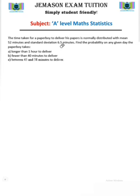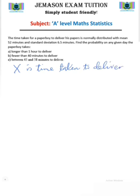To concretize everything learned in this video, we look at this question: the time taken for a paper boy to deliver his papers is normally distributed with mean 52 minutes and standard deviation 6.5 minutes. Find the probability that on a given day the paper boy takes: (a) longer than one hour, (b) fewer than 40 minutes, (c) between 45 and 58 minutes to deliver. We define the random variable X as the time taken to deliver, so X ~ N(52, 6.5²).